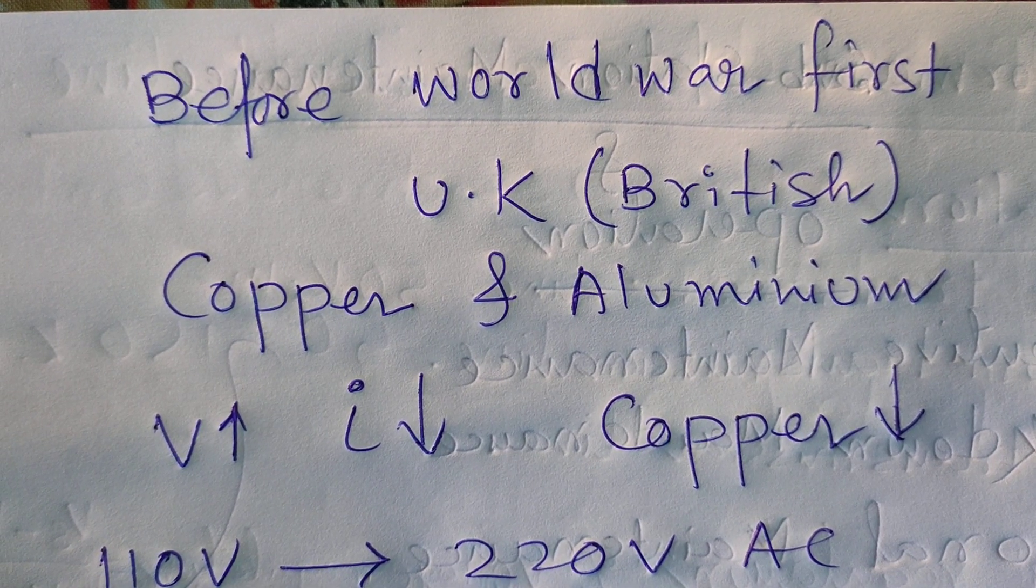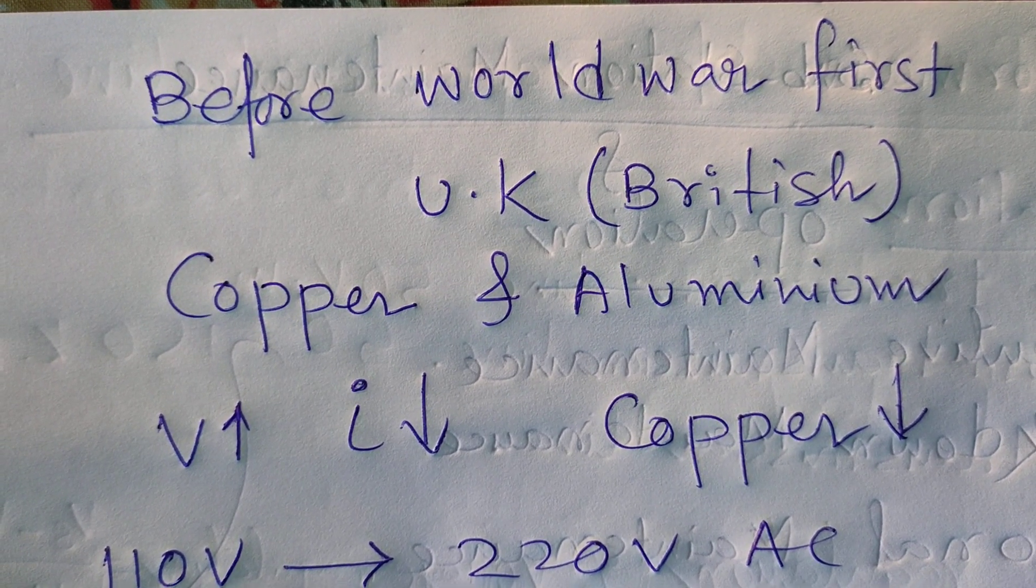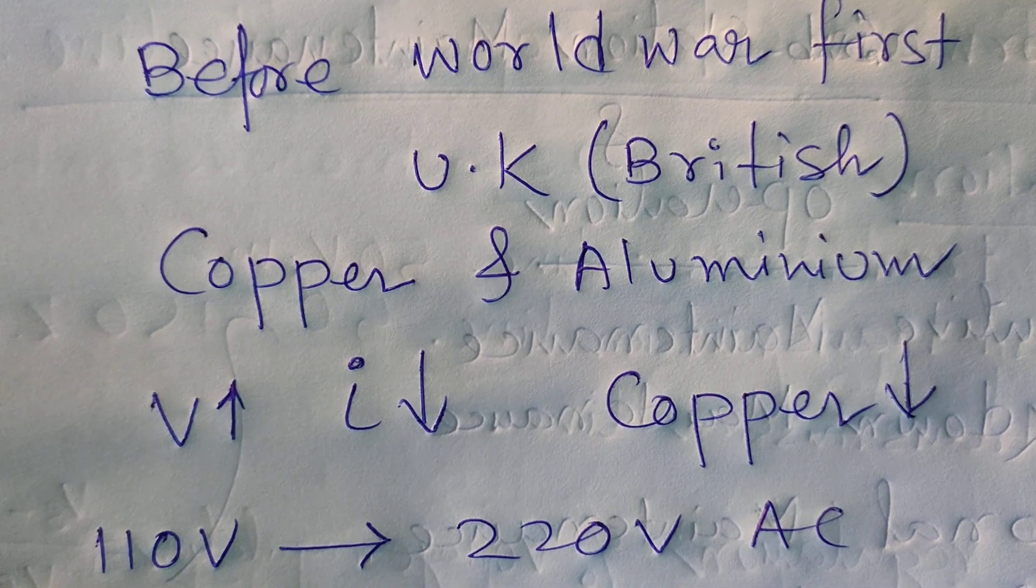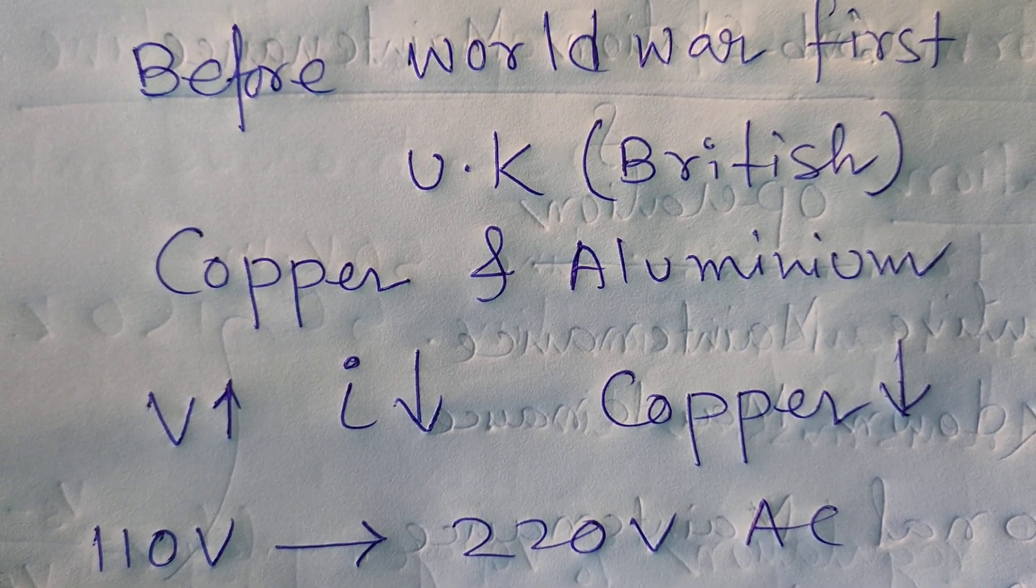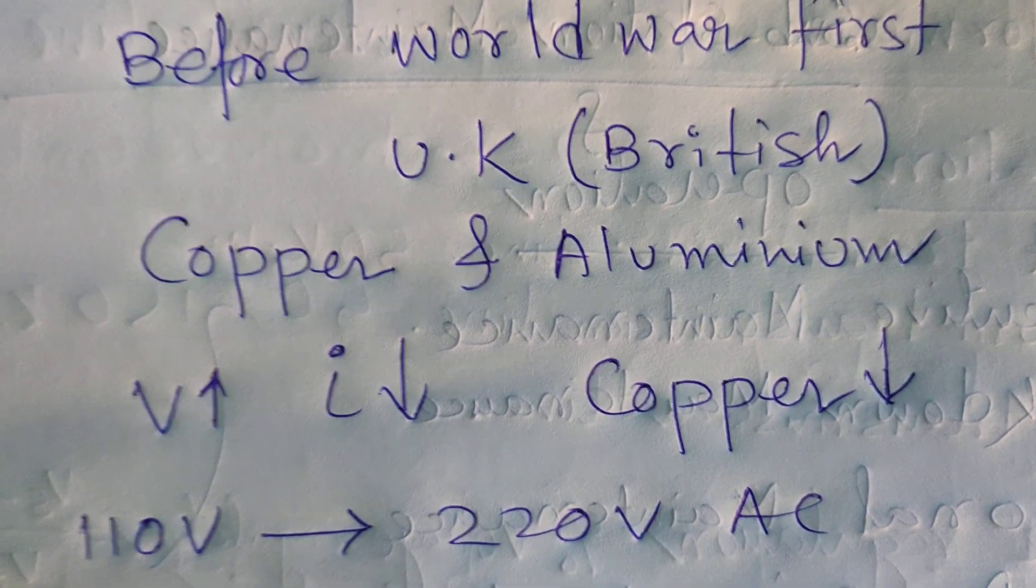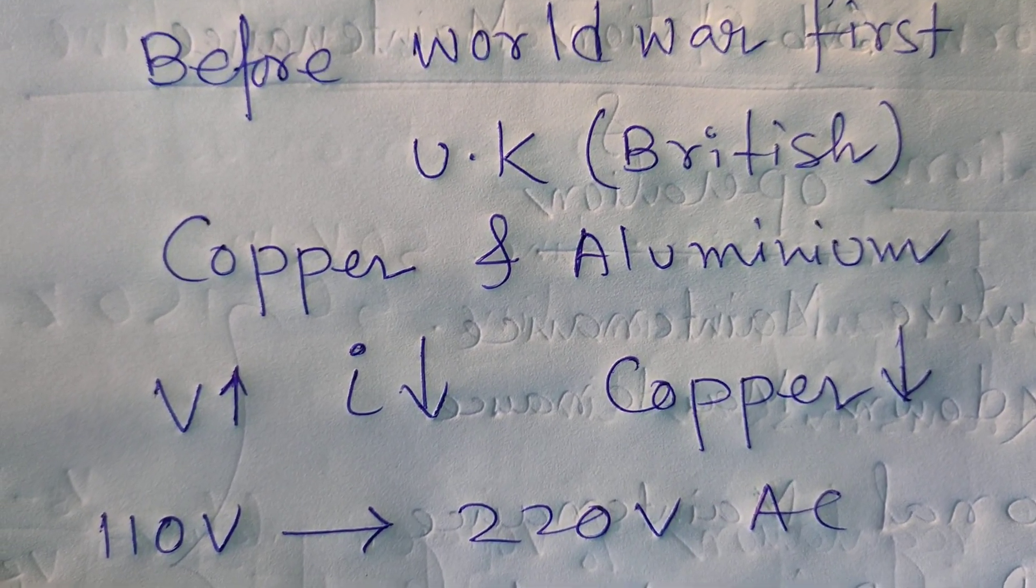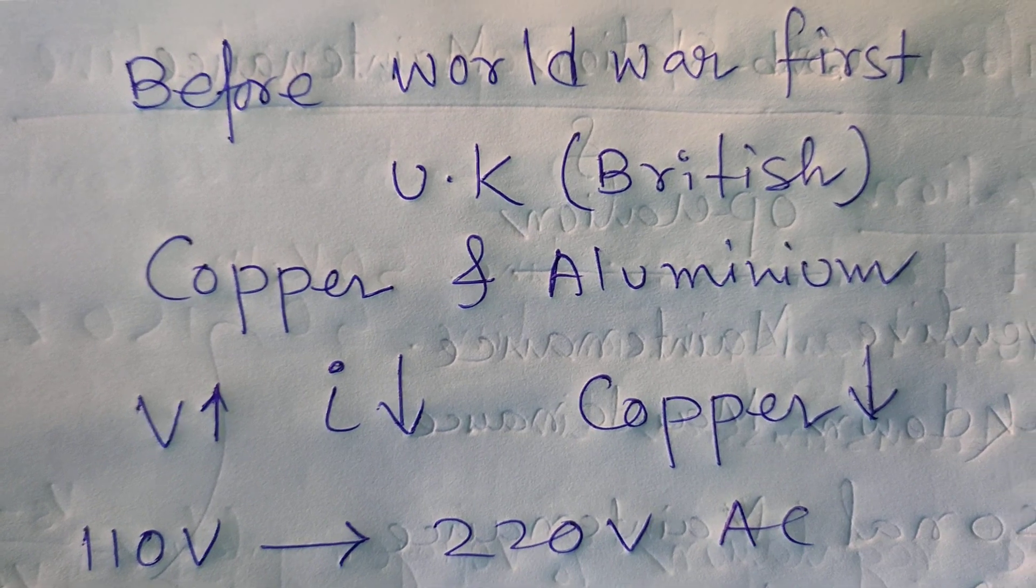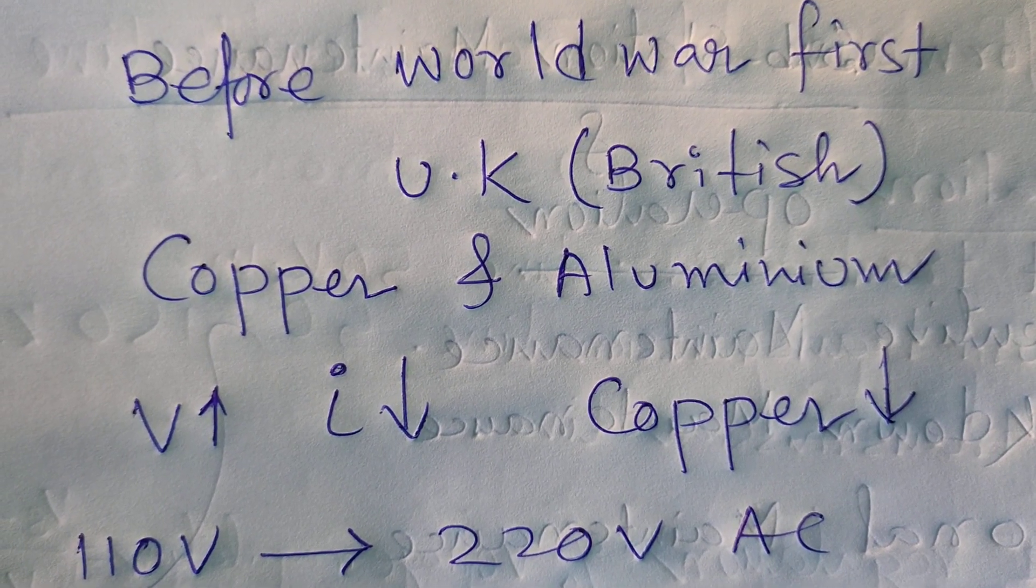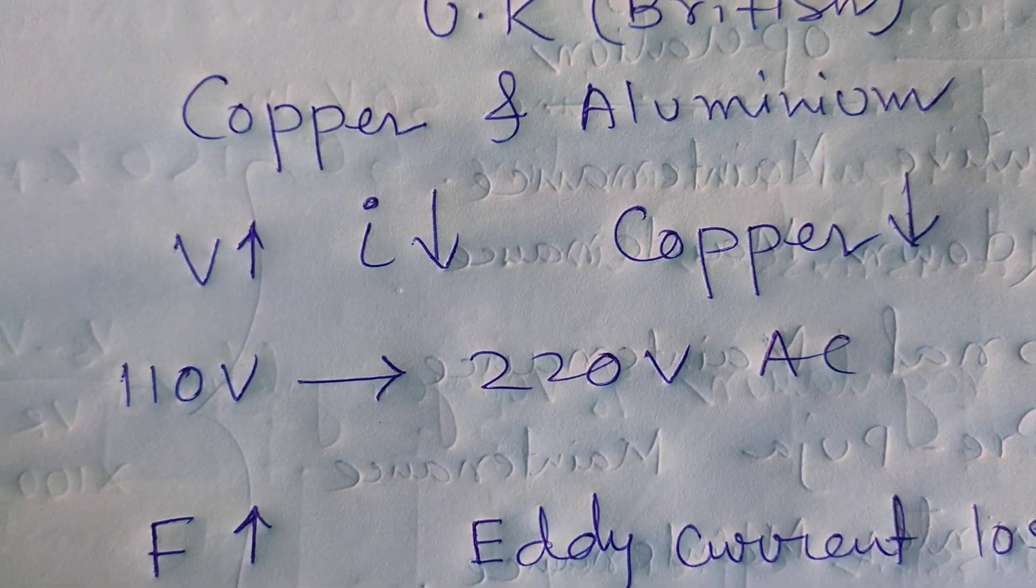Because copper and aluminum availability increased at that time, they decided that if we increase the voltage and decrease the current, the use of copper will be less. So they decided to increase the voltage from 110 volt AC to 220 volt AC.